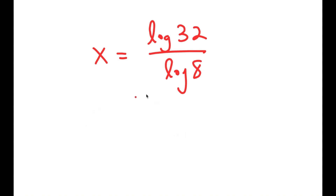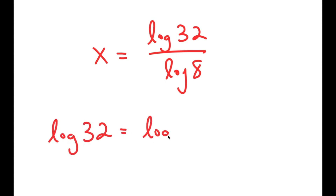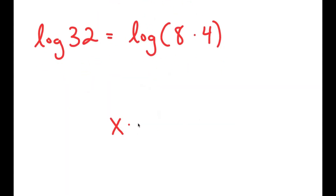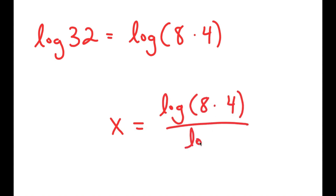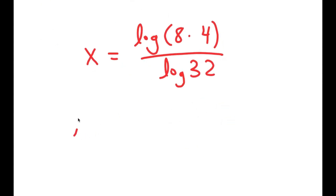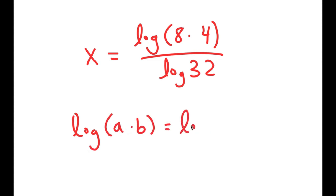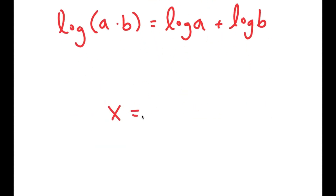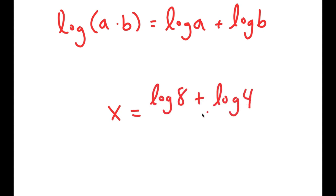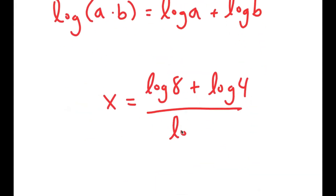Now, log of 32 is the same thing as log of 8 times 4. So I get log of 8 times 4 over log of 8. And if I have something in the form log of a times b, this is equal to log a plus log b. So in this case, this is going to equal log of 8 plus log of 4, and I have this over log of 8.